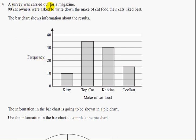Question 4. A survey was carried out for a magazine. 90 cat owners were asked to write down the make of the cat food their cats like best. The bar chart shows information about the results.